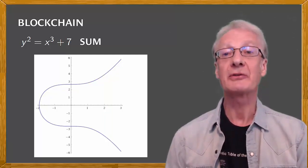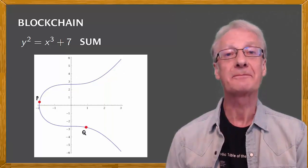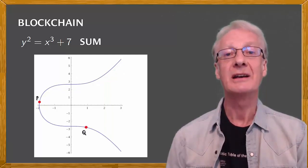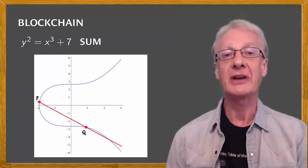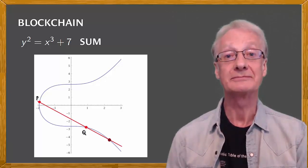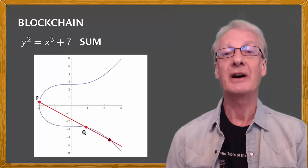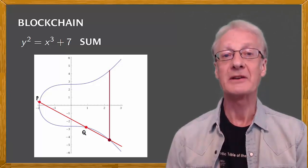Let's repeat the process with these two points. Extend the line that joins the two points until it intersects with the curve at a third point. Again, find the symmetrical point, and this represents the sum P plus Q.